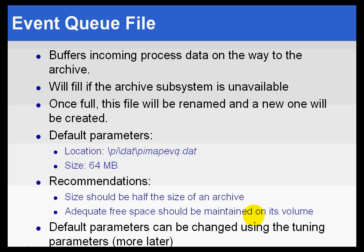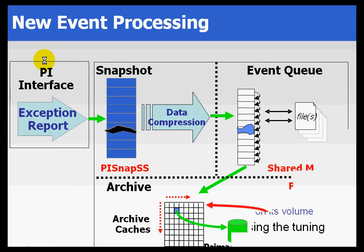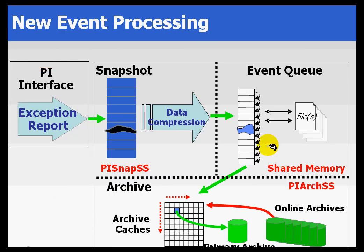Let's take a look at this Event Queue file and discuss it briefly. The Event Queue file is a physical file that buffers the process data as it is on its way to the Archive. Looking at the illustration, this Event Queue file is a kind of waypoint on the journey to the Archive.